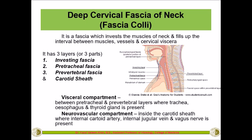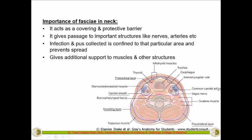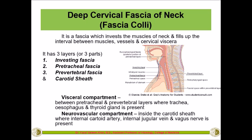Along with the three fascial layers, there is an additional fascia called the carotid sheath. It covers very important structures: the common carotid artery and its terminal branches — the external and internal carotid artery — the internal jugular vein, and the vagus nerve. These three important structures are all covered by the carotid sheath, which is also part of the deep cervical fascia.